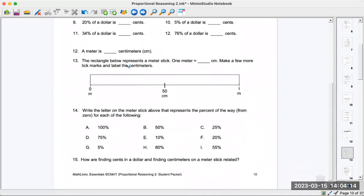Number 12: a meter is 100 centimeters. So one meter is 100 centimeters. Make a few more tick marks and label the centimeters. I will get you started on that one. Your tick marks need to be evenly spaced. Start out with 25, which is halfway between zero and 50. This is 75, half between 50 and one meter or 100 centimeters.